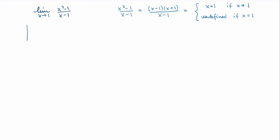With this knowledge, we can sketch the graph of the function. It's just a line with slope 1 going through the point (0, 1), but it has a hole at x = 1, because the function is not defined there. Having a hole means the function is undefined at that point.